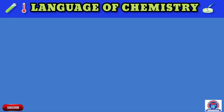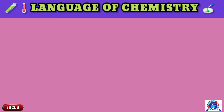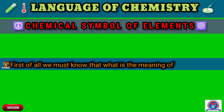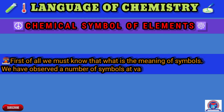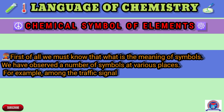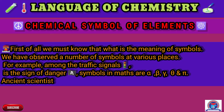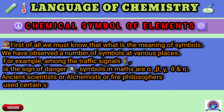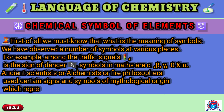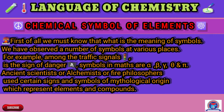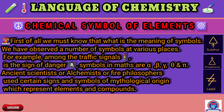In this video session we will discuss chemical symbols of elements. First of all, we must know what is the meaning of symbols. We have observed a number of symbols at various places — for example, among traffic signals, different colors are used as symbols. This is the sign of danger. Symbols in math are alpha, beta, gamma, theta, pi. Ancient scientists, or alchemists, or fire philosophers used certain signs and symbols of mythological origin which represent elements and compounds.